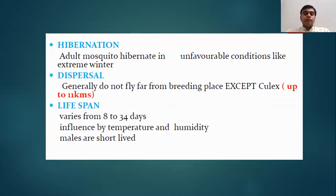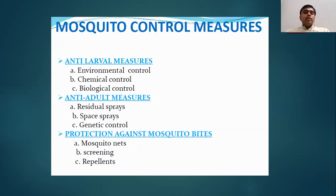Hibernation: adult mosquitoes hibernate in unfavorable conditions like extreme winter. Regarding dispersal, mosquitoes generally do not fly far from their breeding place, except Culex which can fly up to 11 kilometers. Lifespan varies from 8 to 34 days and is influenced by temperature and humidity. Male mosquitoes are short-lived. Mosquito control measures include anti-larval measures, anti-adult measures, and protection against mosquito bites. Anti-larval measures are environmental control, chemical, and biological control. Anti-adult measures are residual spray, space spray, and genetic control, plus protection by mosquito nets, screening, and repellents.